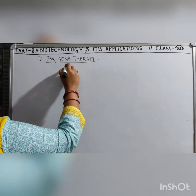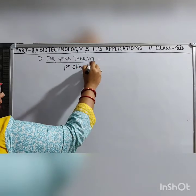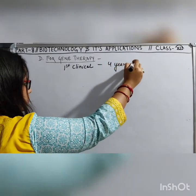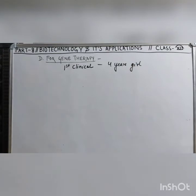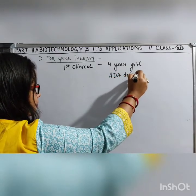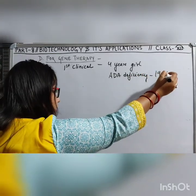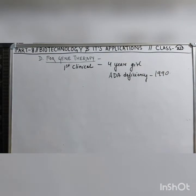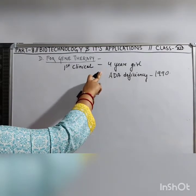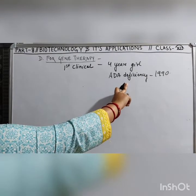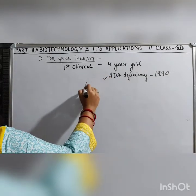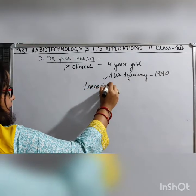The first clinical gene therapy was given to a 4-year-old girl who was suffering from ADA deficiency in the year 1990. So this is a very recent development — from 1990 to 2020. ADA stands for adenosine deaminase.